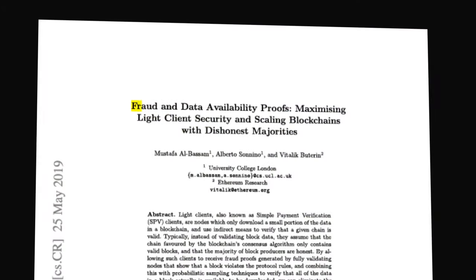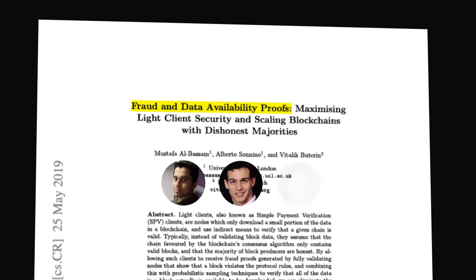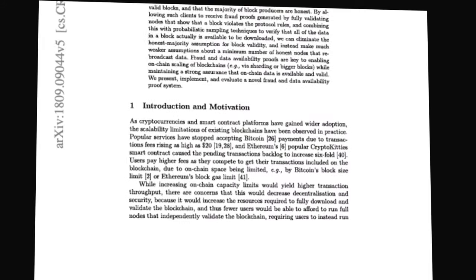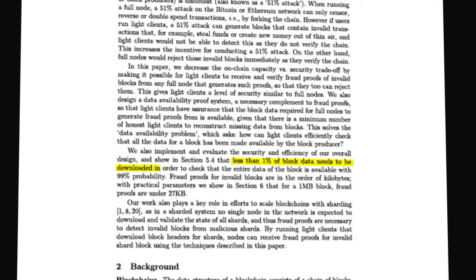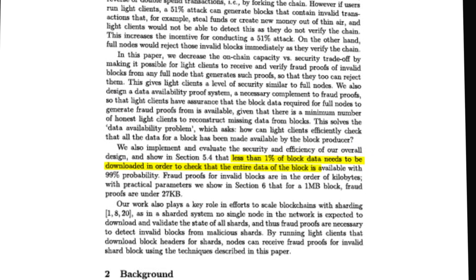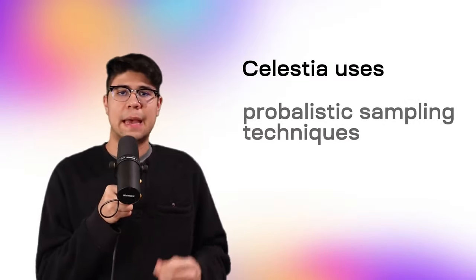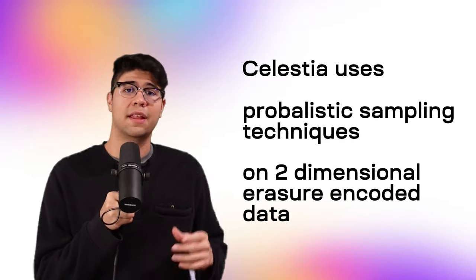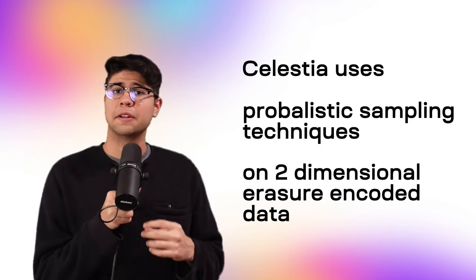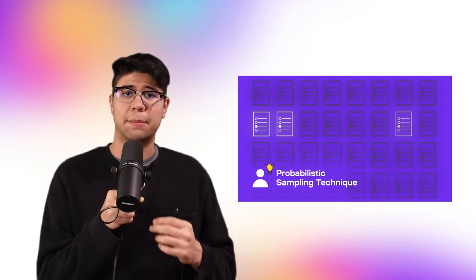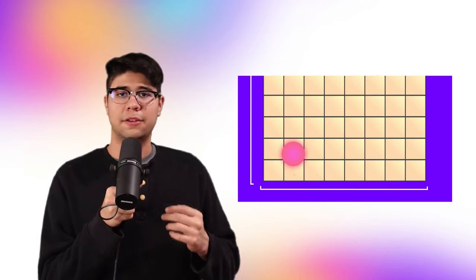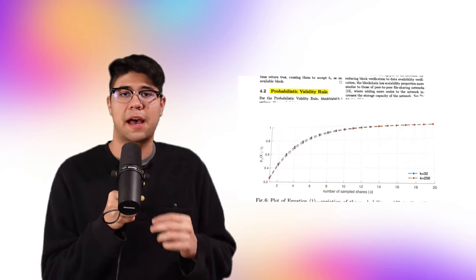The research paper, Fraud and Data Availability Proofs, by co-authors Mustafa Al-Bassam, Alberto Sonnino, and Vitalik Buterin, on page 2 describes a probabilistic sampling technique. It states that only 1% of block data needs to be downloaded in order to check that the entire block data is available with 99% probability. Celestia uses probabilistic sampling techniques on two-dimensional erasure-encoded data. So first we're going to learn about what are probabilistic sampling techniques, Reed-Solomon's algorithm and 2D erasure encoding, and then the math and probabilities behind data availability sampling.